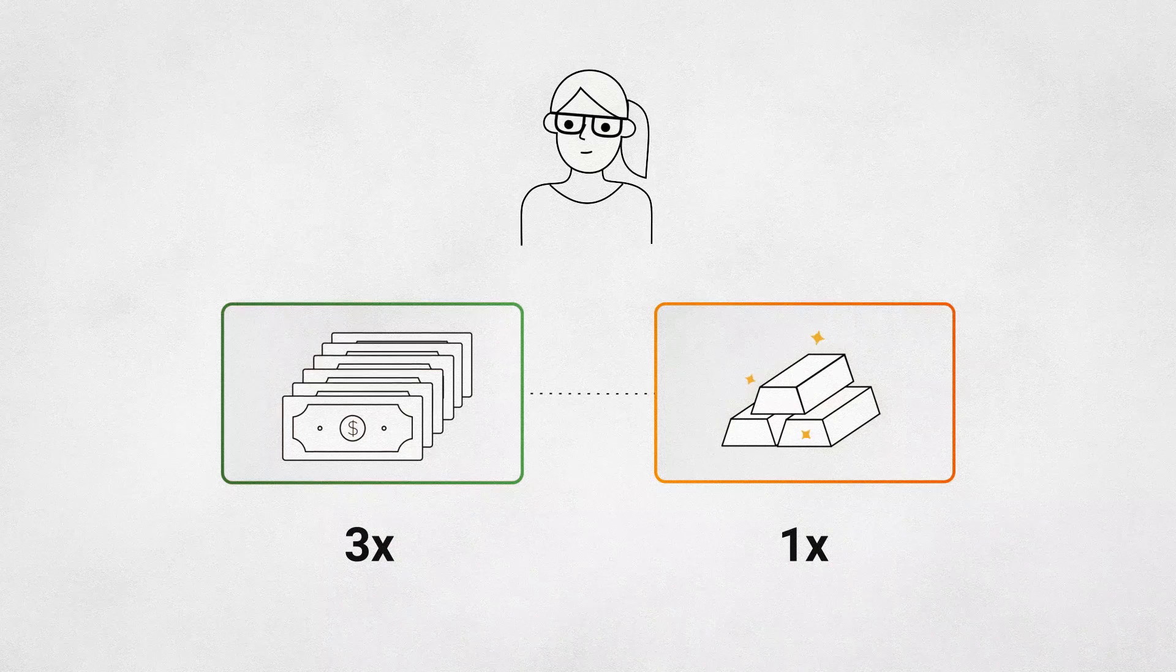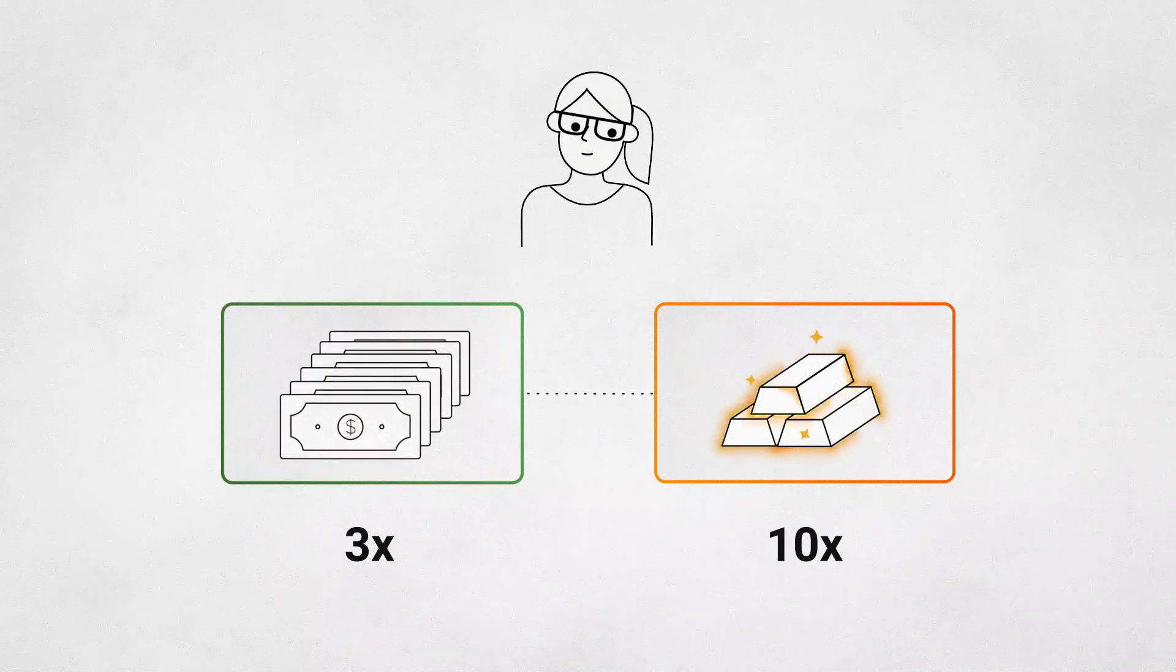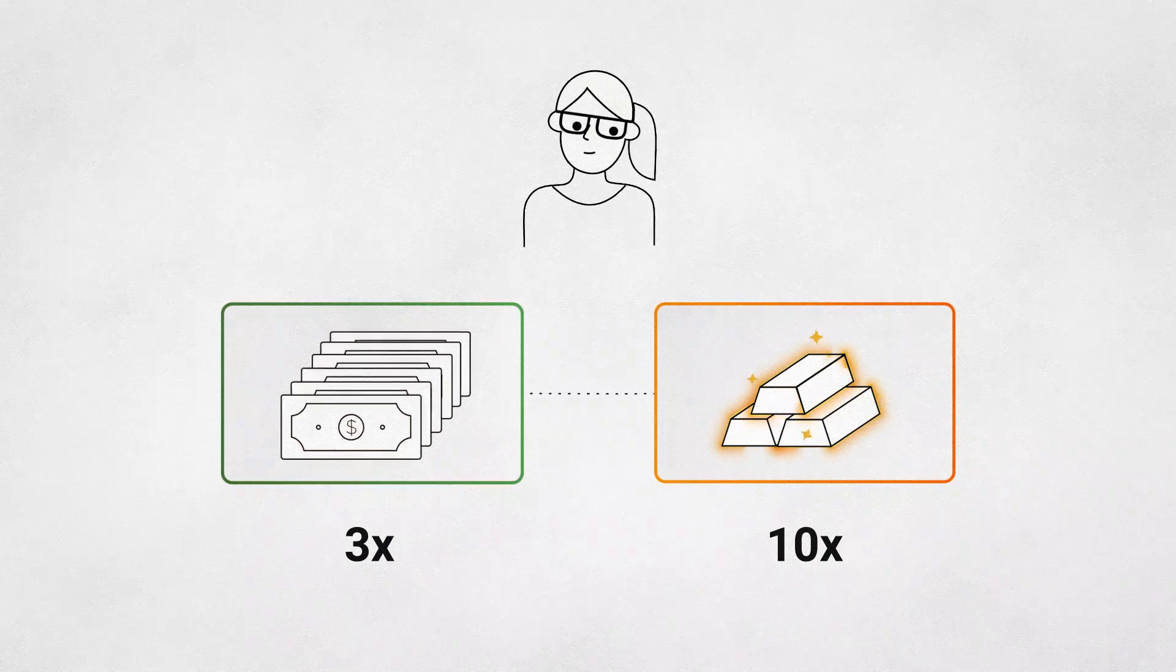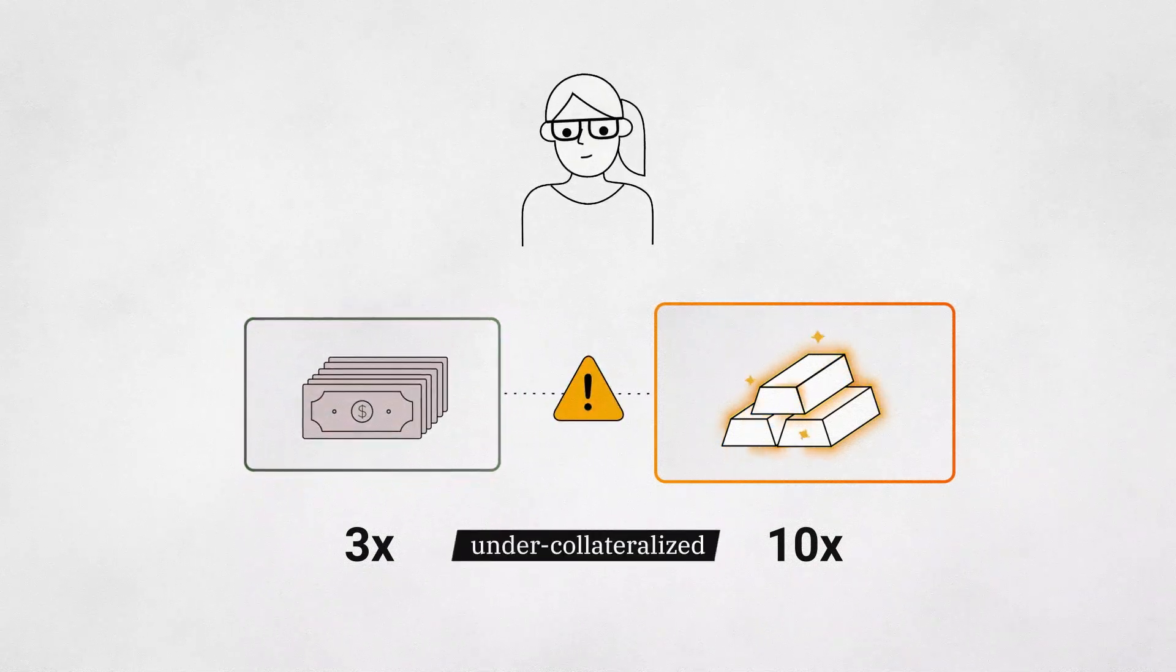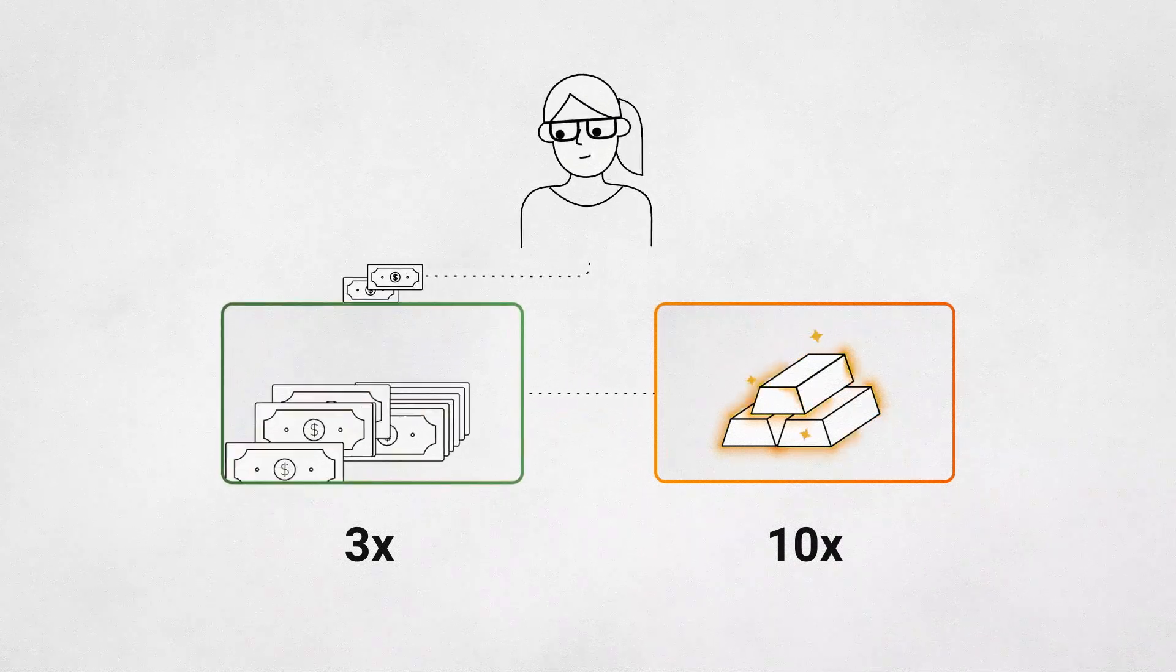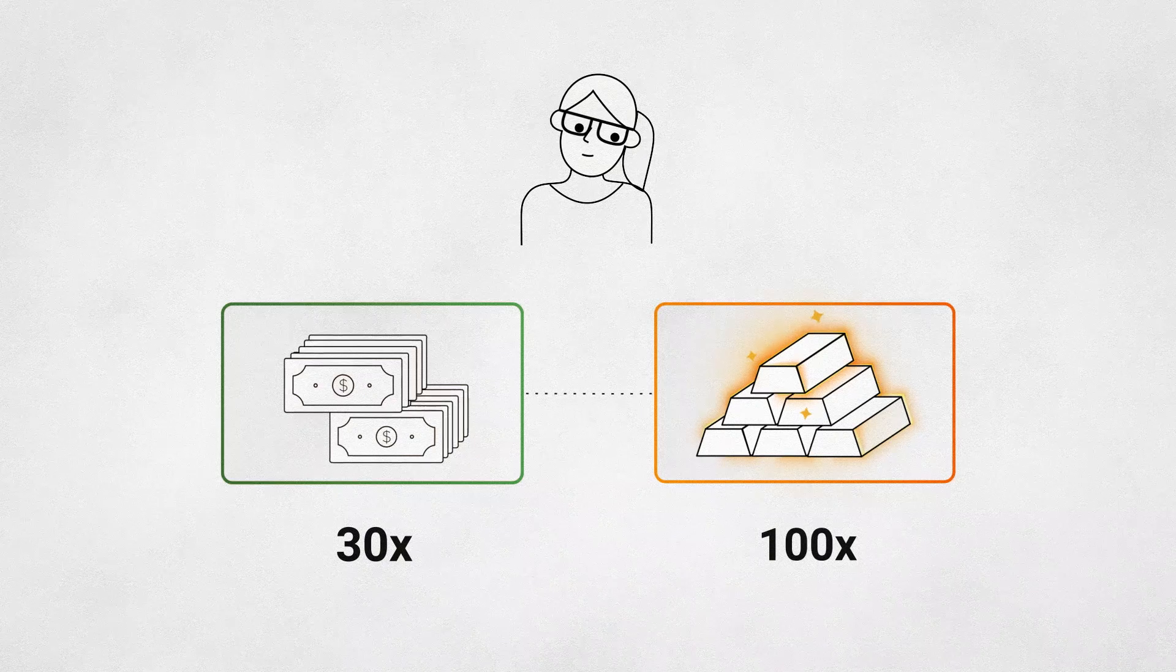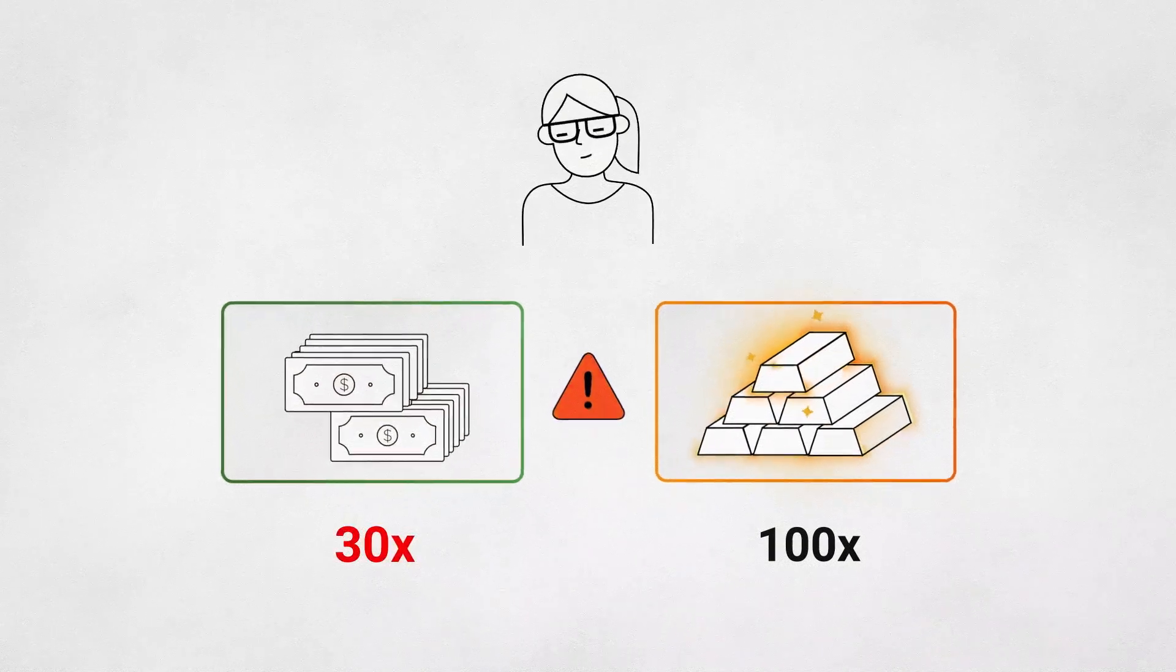Over time, let's say the value of the gold increases by 1,000%. At this point, the system will no longer have enough dollars to support the mass of synthetic gold it was representing. Unless Alice can invest the dollars backing the gold in such a way that always outpaces the value of the gold she's synthetically representing, the system will eventually break.